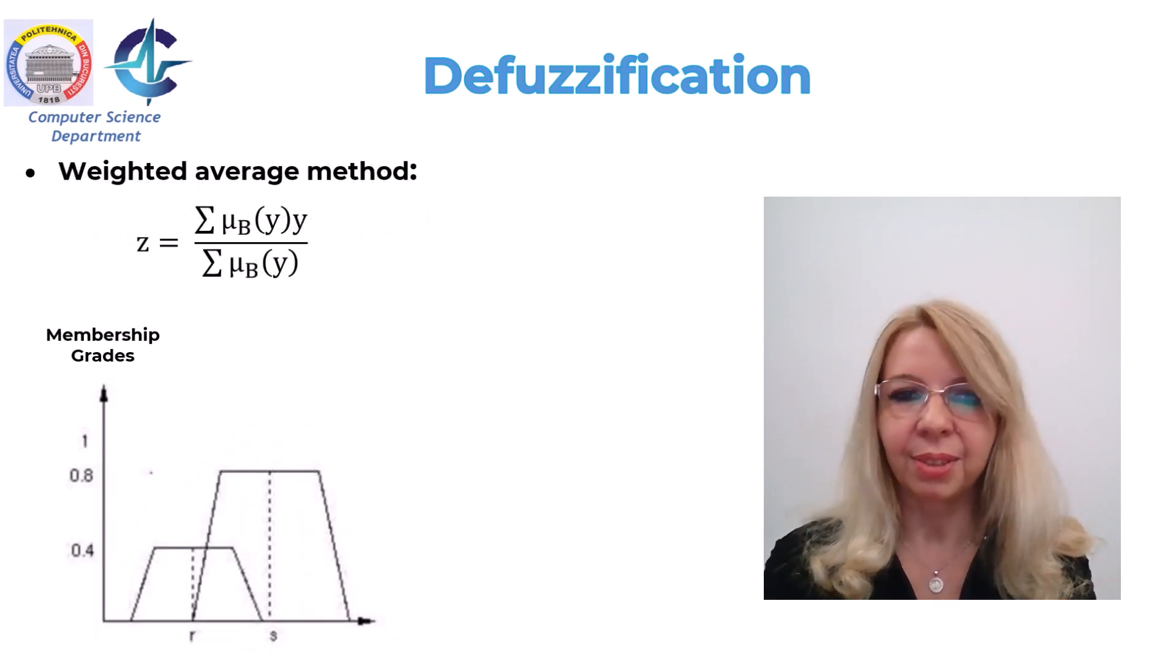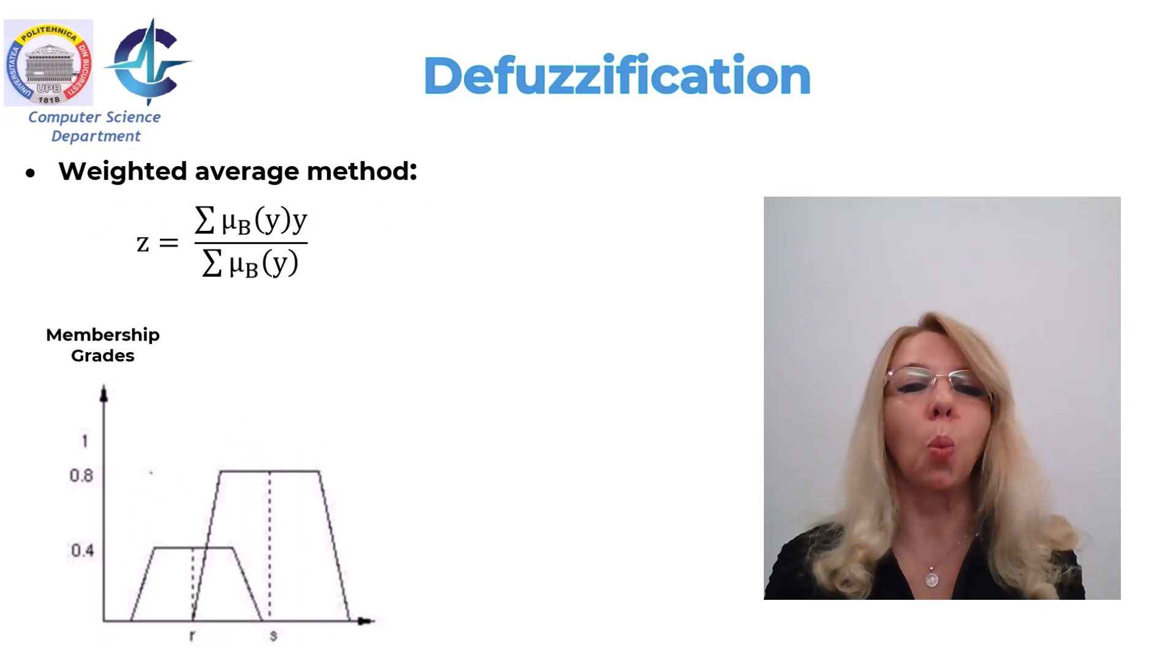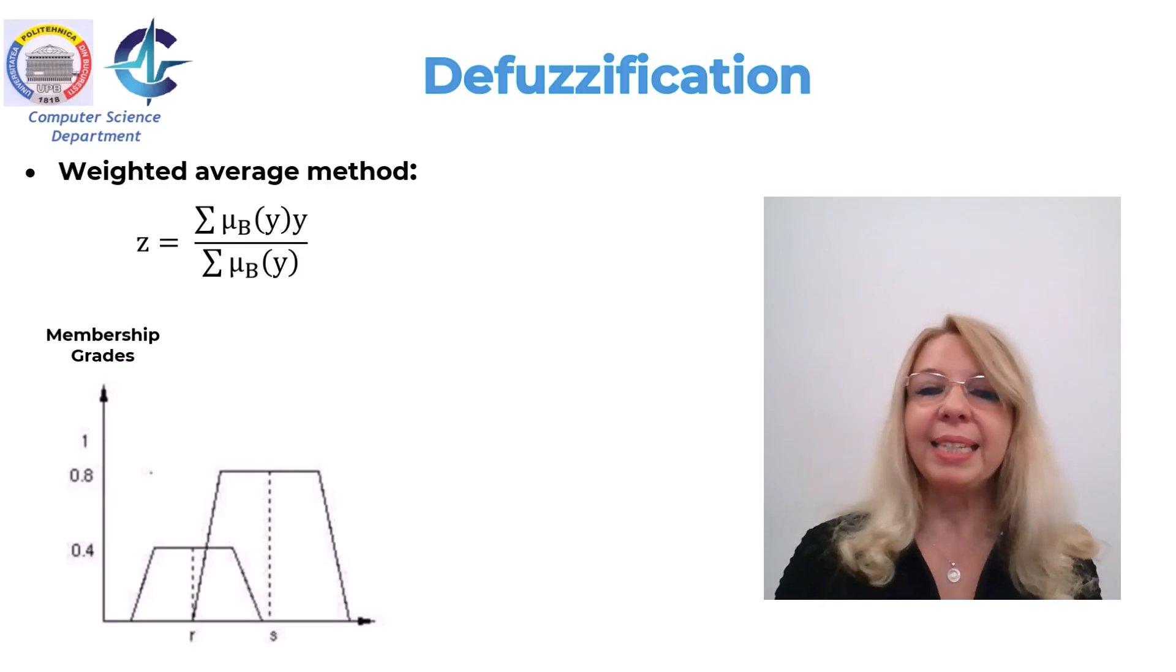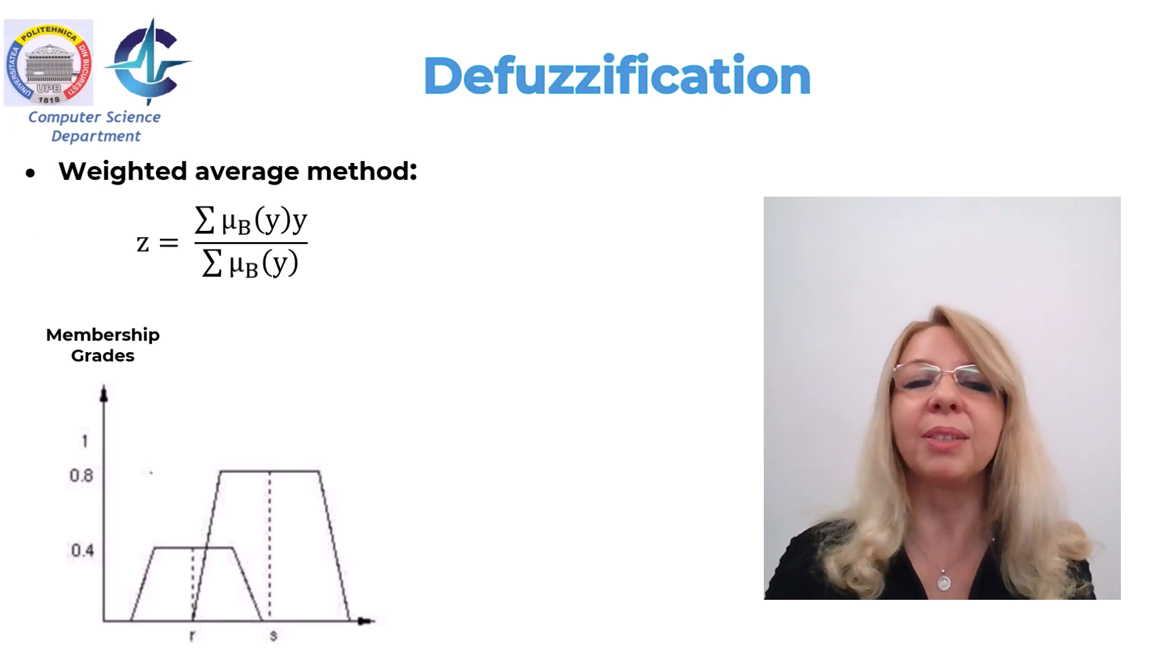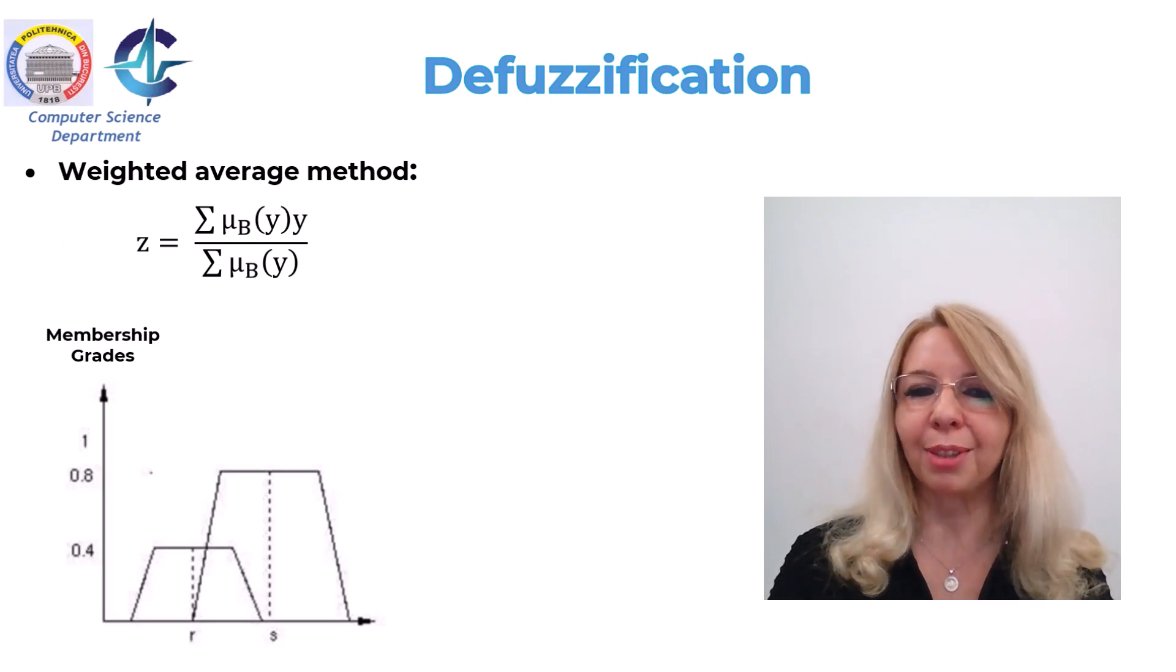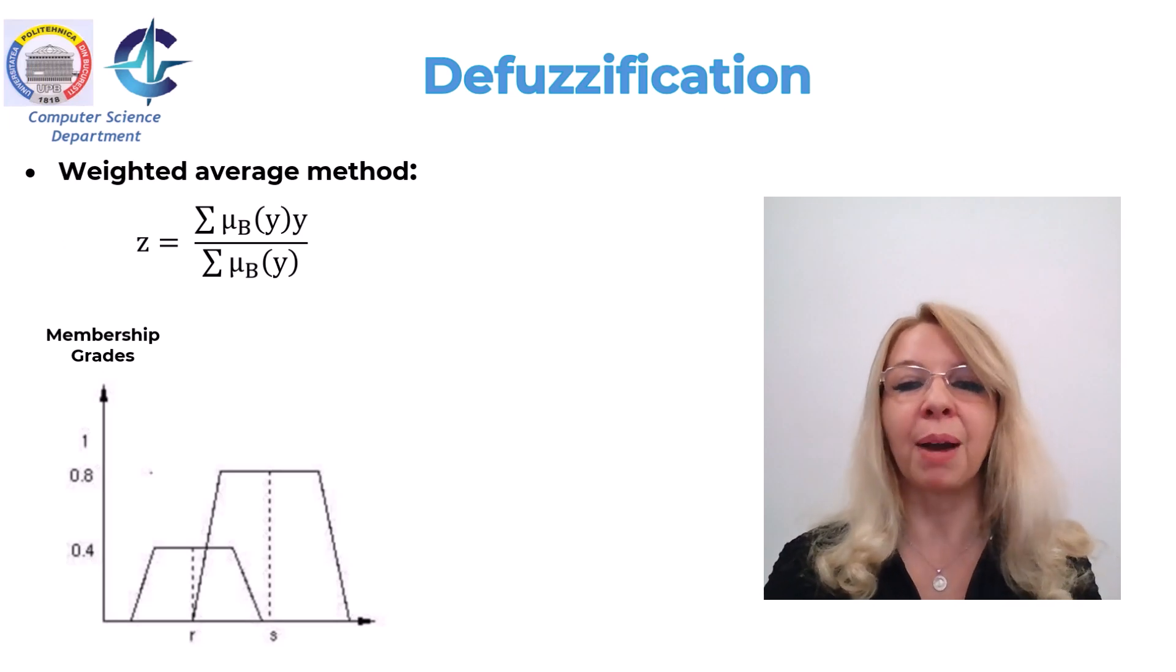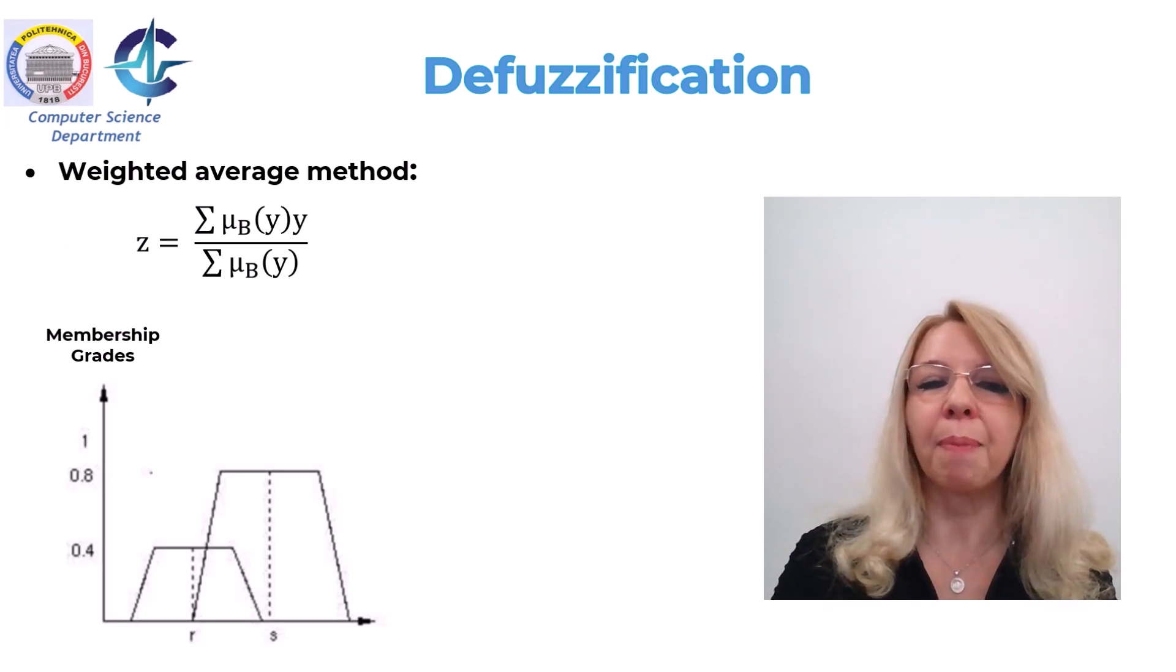Another defuzzification method is the weighted average method. This one is valid only for symmetrical output membership functions. It is given by the expression you can see next to me. This method is formed by weighting each membership function in the output by its respective maximum membership value. The figure shows this defuzzification method: center of gravity, mean of maxima, the weighted average method.